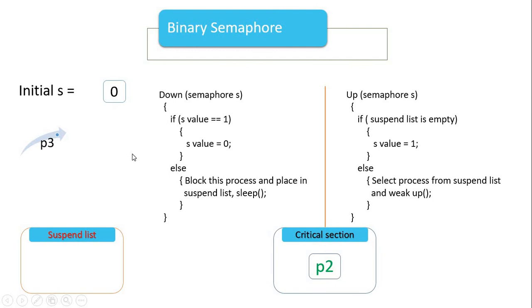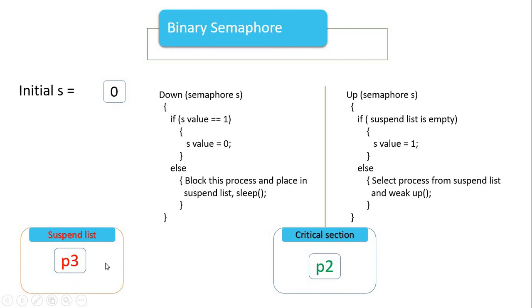P3 tries the condition — false, value is 0 — and is placed in the suspend list. Check if the suspend list is empty — no. Check again — suspend list is not empty.